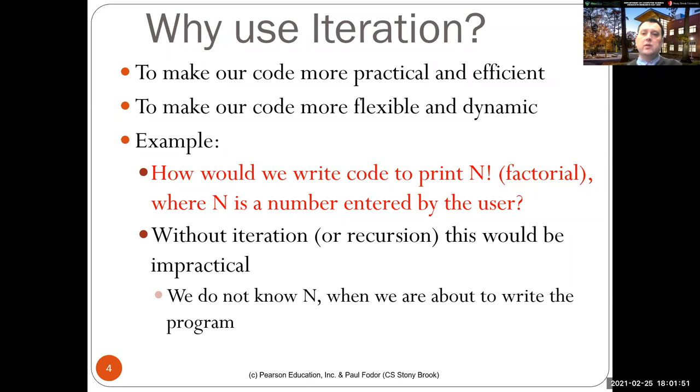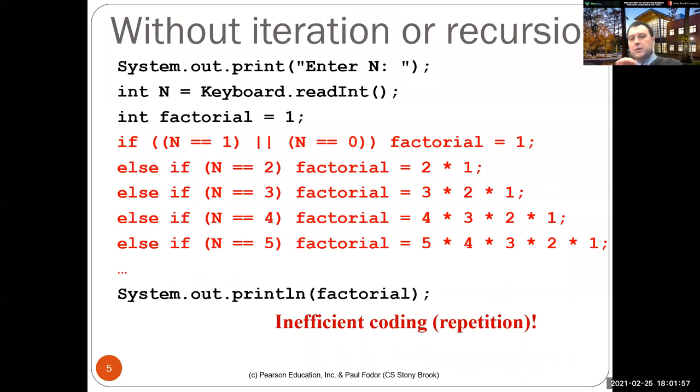Without iteration, if the user would enter N and then we'll have to compute factorial, we'll have to have a separate formula for every factorial. Like 1 factorial is equal with 1, 0 factorial is equal with 1, 2 factorial is equal with 2 multiplied with 1, 3 factorial is equal with 3 multiplied with 2 multiplied with 1 and so on.